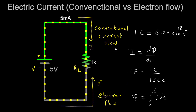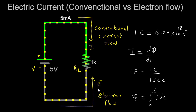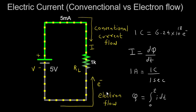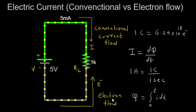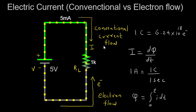However, as further experiments and research were conducted, it was discovered that electrons, which are negatively charged, were the actual carriers of electric current in most conductive materials. Electrons are more mobile and can easily move through the lattice structure of conductors. This understanding of electron flow — from the negative terminal to the positive terminal — came to light. Conventional current represents the flow of positive charges, opposite to the actual movement of electrons, and is used in circuit diagrams and most electrical conventions.